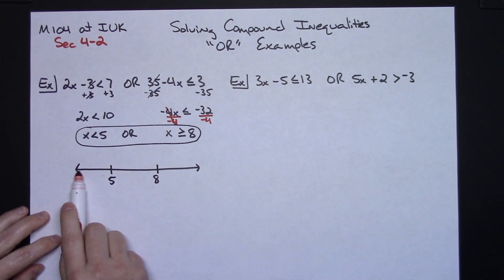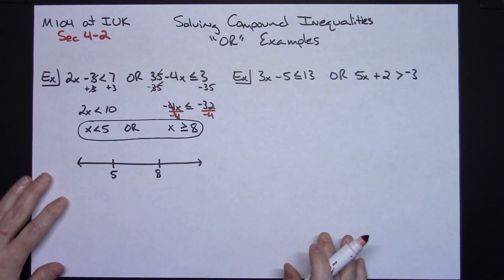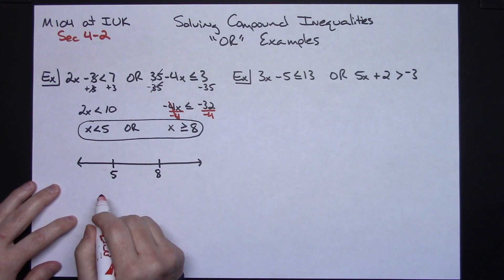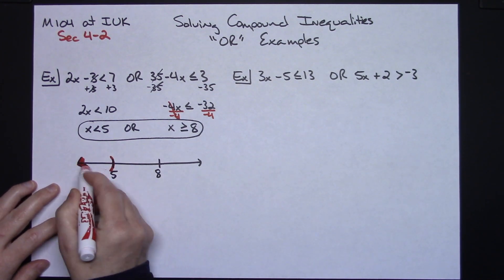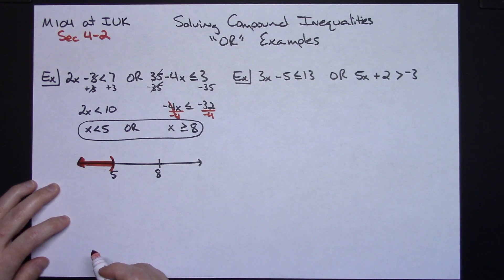Well that would be down here. And less than 5 means I'm not going to include 5 in my answer. So curvy bracket there and that part of the equation is here.